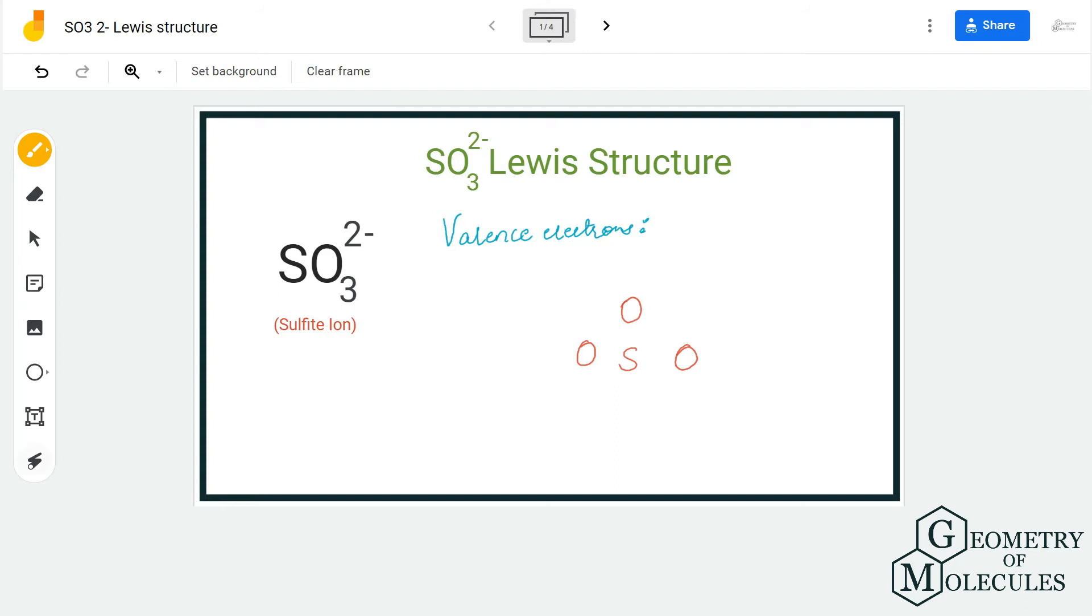Hi guys, welcome back to our channel. In today's video we are going to determine the Lewis structure for SO3 2- ion, also known as sulfite ion. The -2 charge is because it is accepting two additional electrons, and hence the ion acquires a negative charge.